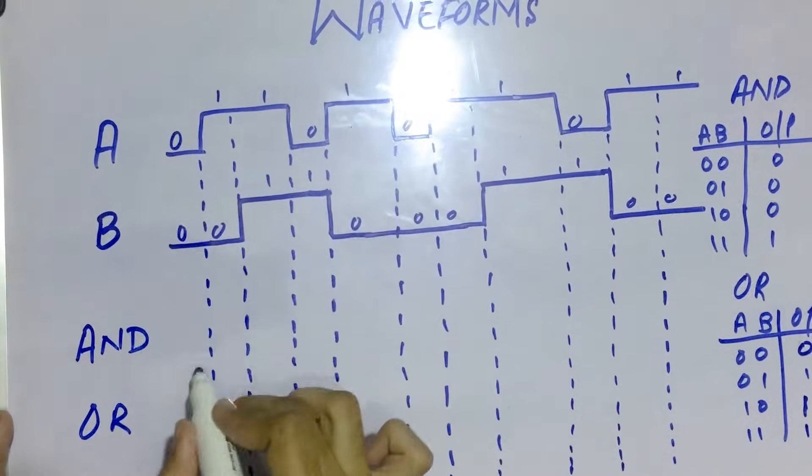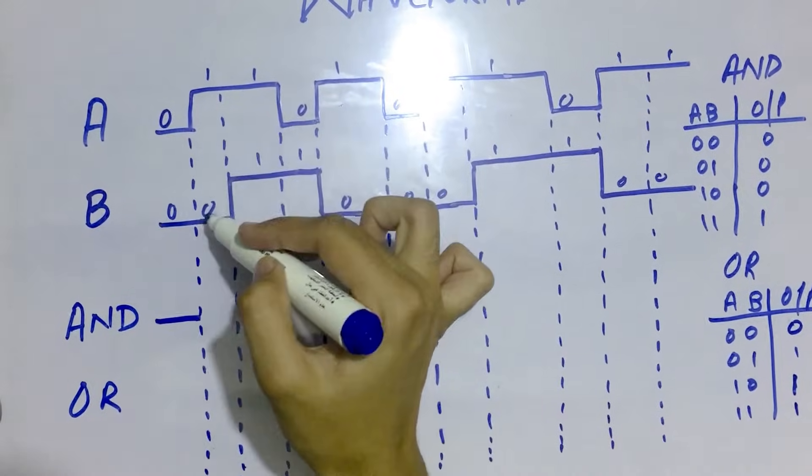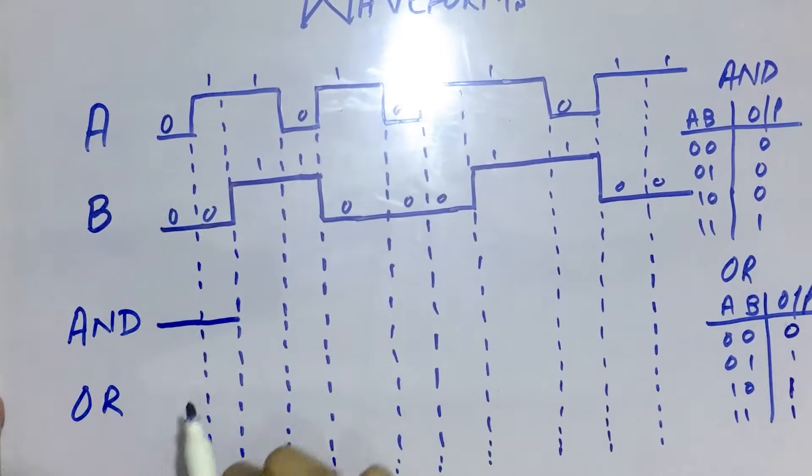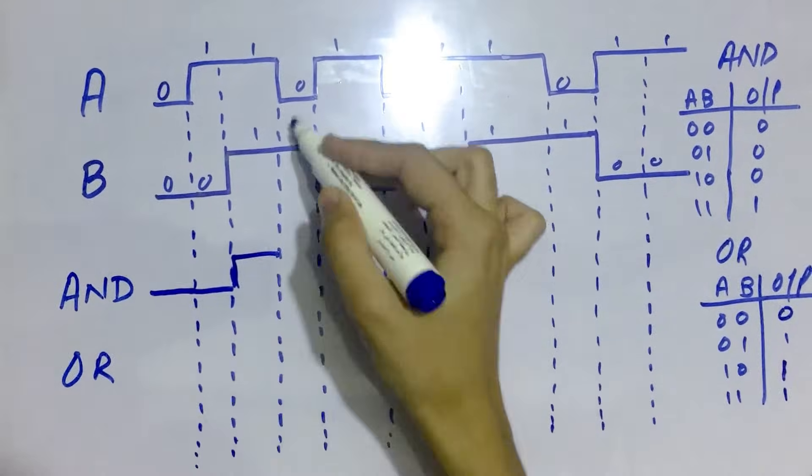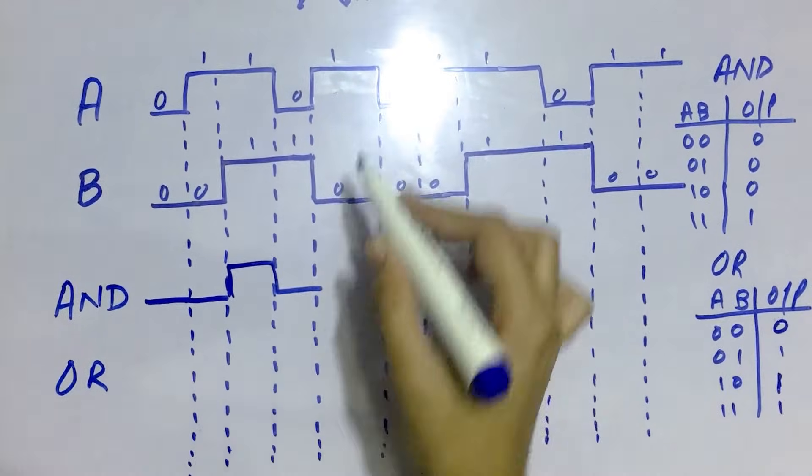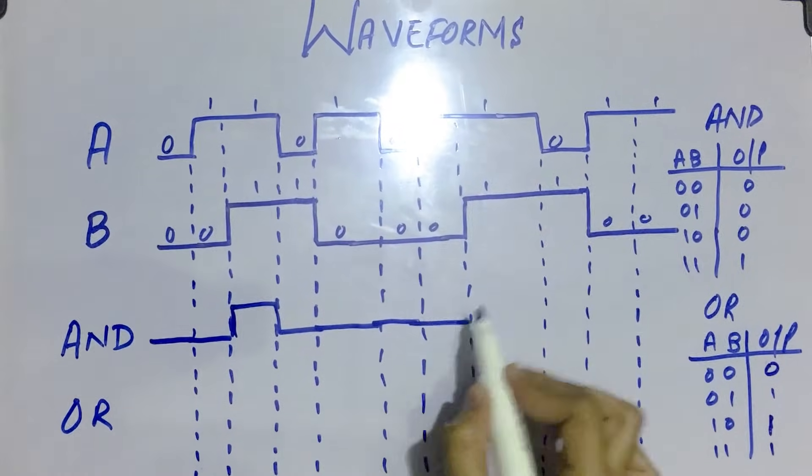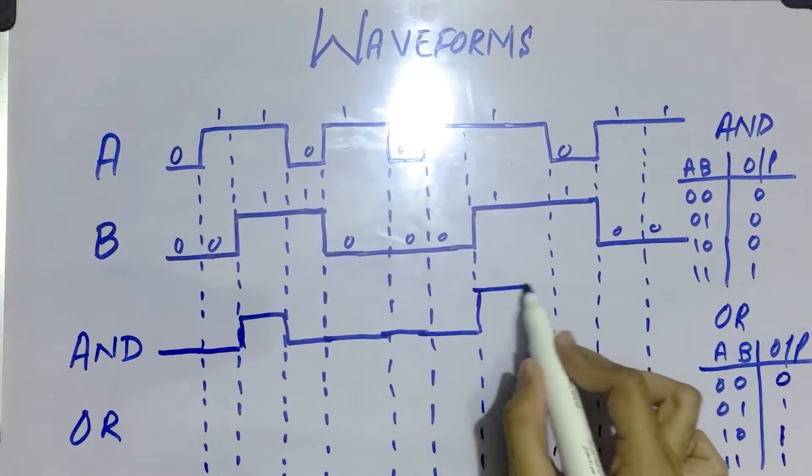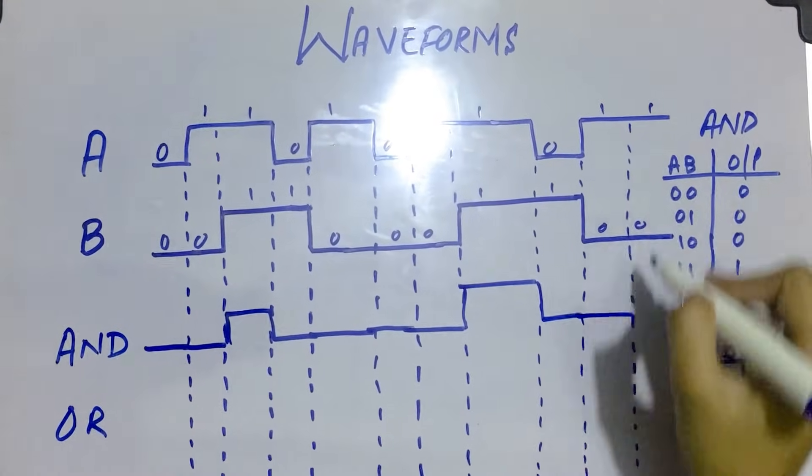Here we have 0 and 0, so the waveform is 0. Now with 1 and 0, the output is 0. With 1 and 1, the waveform is 1. With 1 and 0, the waveform is 0. Continuing through the inputs: 1 and 0 is 0, 0 and 0 is 0, 1 and 0 is 0, 1 and 1 is 1, 0 and 1 is 0, and 1 and 0 is 0.